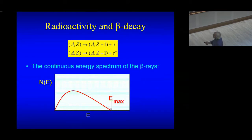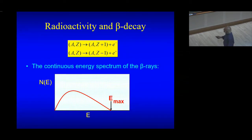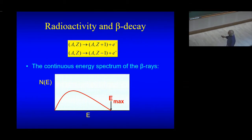In 1937, Enrico Fermi gave the theory of beta decay and radioactivity. A proton inside the nucleus emits a positron and converts itself to a neutron, or the other way around. The experimental fact concerning this beta decay was the following: if you plotted the number of electrons that you receive as a function of energy, you got a continuous spectrum with a maximum energy.